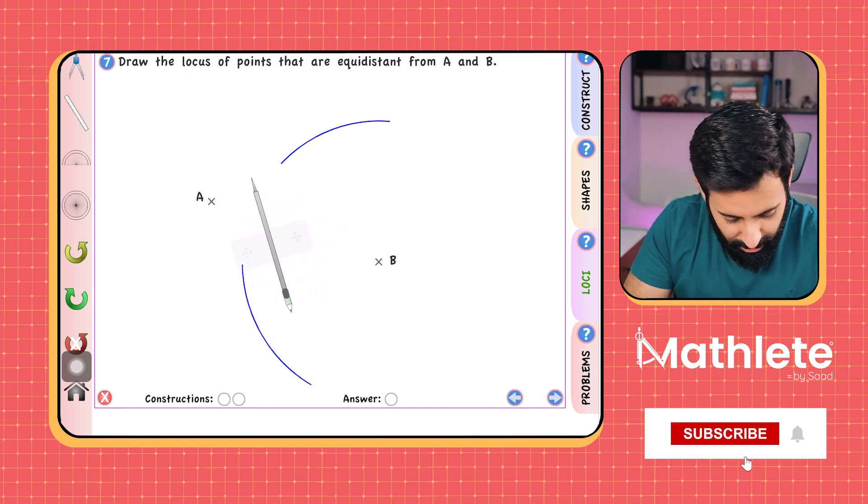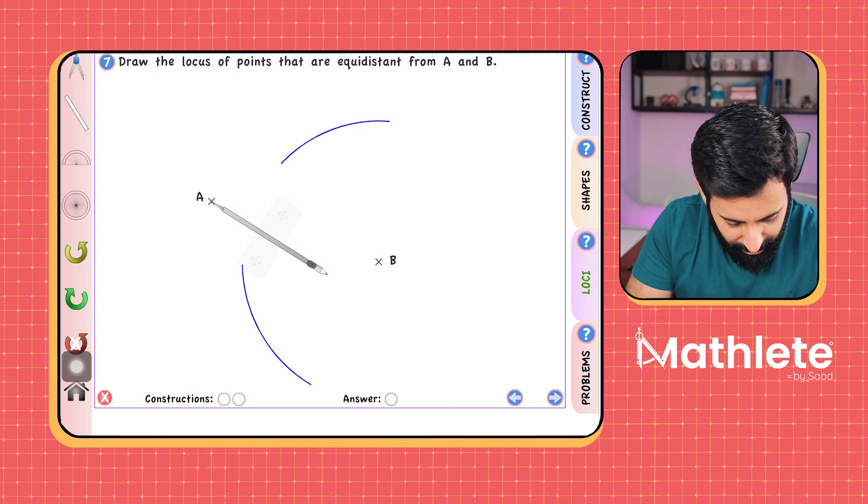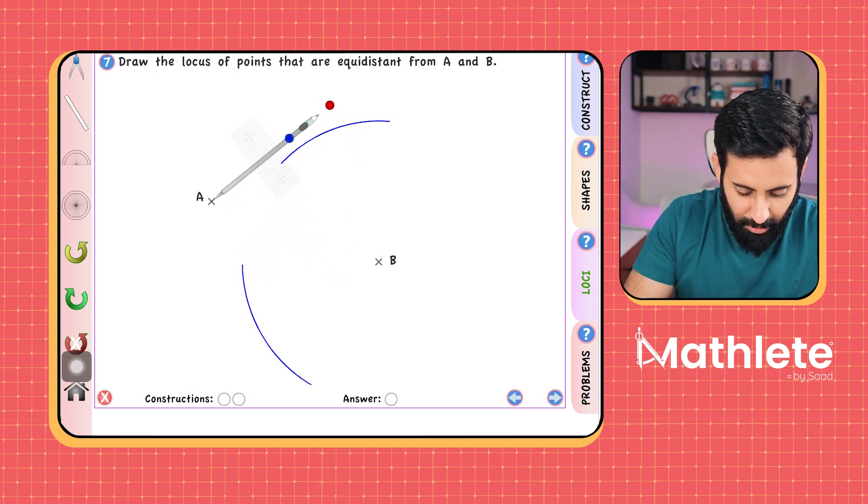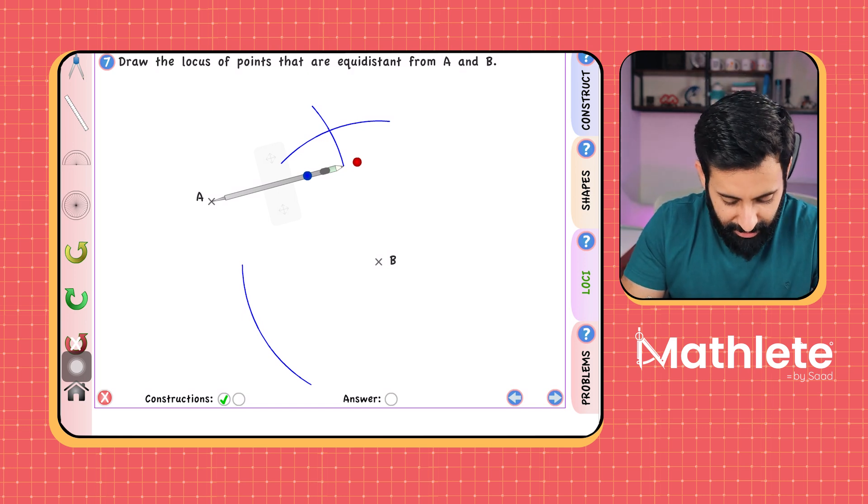Okay, now once that is done, place your compass, meaning the pointed side on the opposite side. Okay, so now let's place it at A, make an arc. Okay, and you will notice that the arcs intersect. So these two arcs intersect.